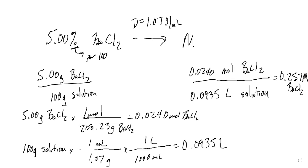Even going the other way, it's still a two-step calculation. Split it into parts, calculate each part individually, and bring them back together at the end. But you have to know your definitions — what molarity is, what mass percent is. Without that knowledge, it's difficult.